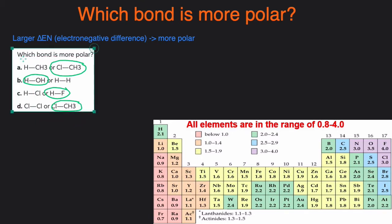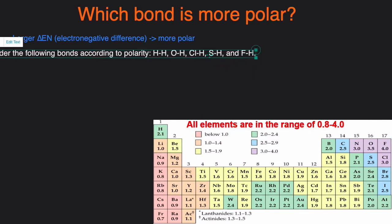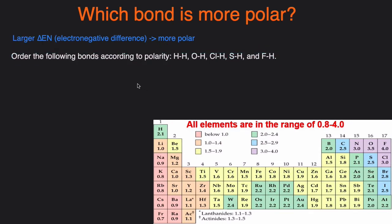Alright, let's take a look at another example. We have to order the following bonds according to polarity, ranking them from least polar to most polar: H-H, O-H, Cl-H, S-H, and F-H. Once again, we're just going to look at the electronegativity differences between these elements, and the larger the electronegativity difference, the more polar.